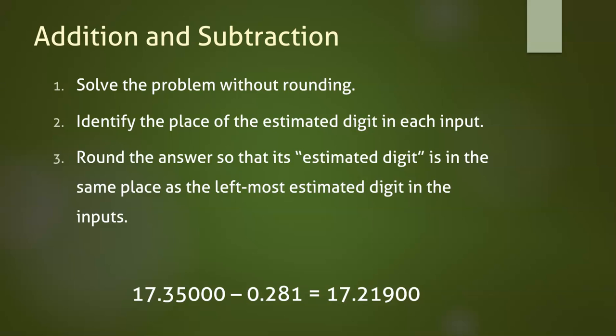As an example, I have this subtraction problem solved for you. The first number, 17.35000, has its estimated digit, that last digit, in the hundred thousandths place. The second number, 0.281, has its estimated digit in the thousandths place. Since thousandths are to the left of hundred thousandths, your answer should end at the thousandths place. Your reported answer, then, would be 17.219.